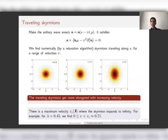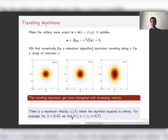The expansion is much faster in the perpendicular direction. This continues until a critical maximum velocity vc is reached, at which point the skyrmion expands to infinity and disappears. For example, for lambda = 0.45, the velocity can be up to about 0.71.